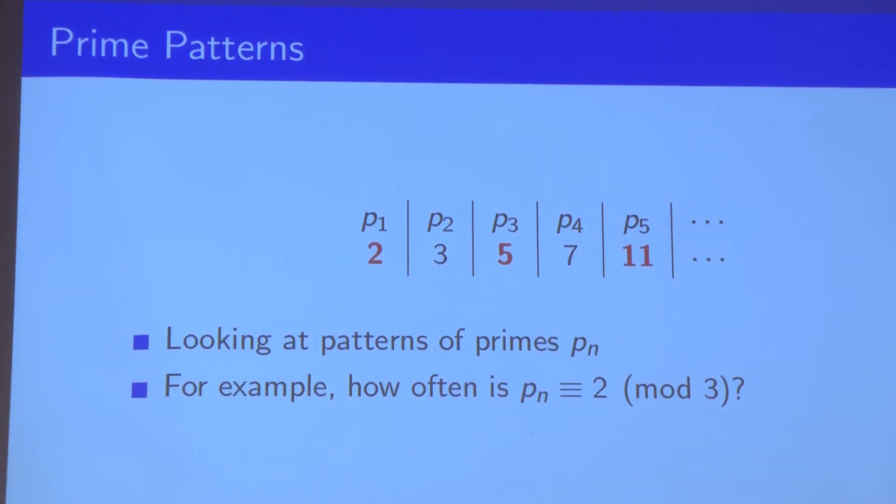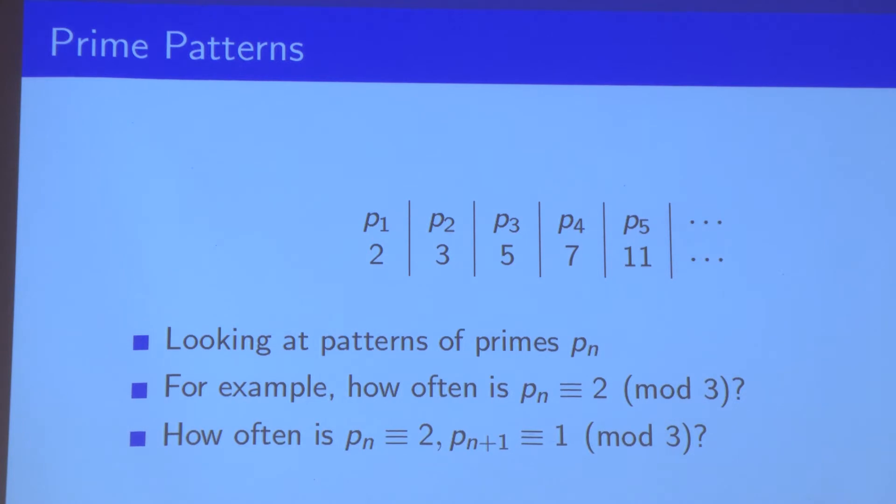That's only looking at one prime at a time. What if we want to look at more primes, not just one, but let's say two or three or even more? If we look at pairs of consecutive primes, P_n and P_{n+1}, we can look at these patterns of length two.